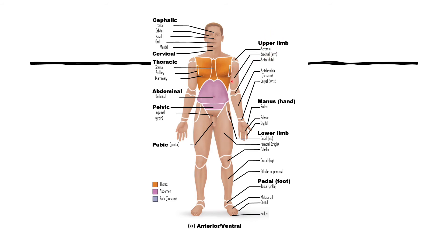Moving on to the limbs: in the upper limb, brachial refers to the arm — for example, a blood pressure cuff is applied on the brachial region. The antecubital region is where blood is drawn. The antebrachial region is the forearm. Carpal refers to the wrist — think of carpal tunnel syndrome, which is a wrist problem, not a leg problem.